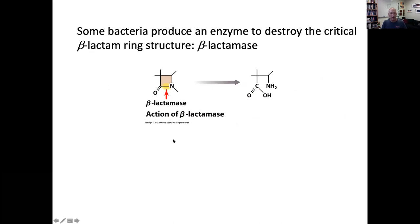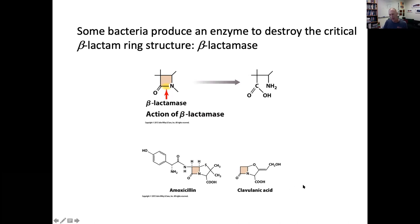Bacteria have evolved ways to fight back against beta-lactam antibiotics using an enzyme called beta-lactamase. Beta-lactamase cuts the beta-lactam ring so that the antibiotic structure is no longer a good fit for the active site of the transpeptidase. We can fight back against that using a drug called clavulanic acid, which fits in the active site of beta-lactamase and cannot be cut, poisoning the beta-lactamase. Clavulanic acid is used in combination with the potent beta-lactam amoxicillin; the combination drug is called Augmentin.